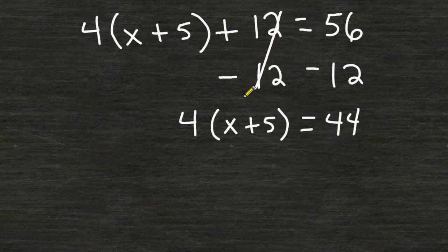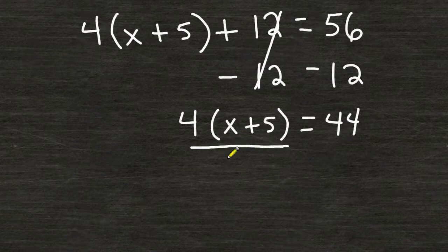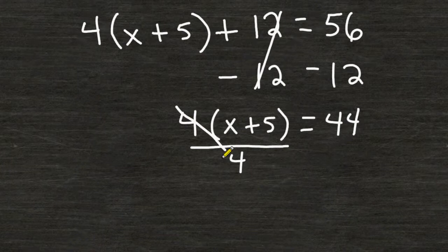The next thing that we have to do is get rid of this times 4 on the left hand side of the equal sign. The opposite of multiplying by 4 is dividing by 4. By dividing any number by itself, that will turn it into positive 1, and that leaves us with one whole quantity of x plus 5.